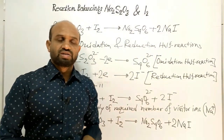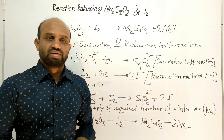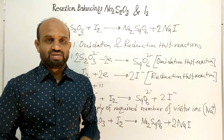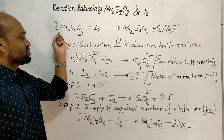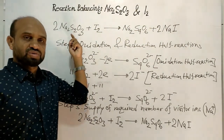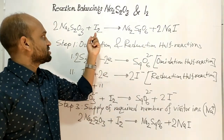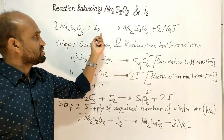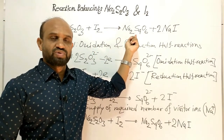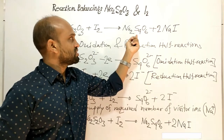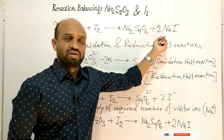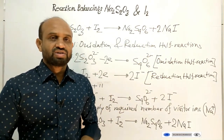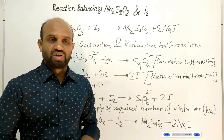The redox reaction is now fully balanced by the ion electron method: 2 sodium thiosulphate plus 1 molecule of iodine gives 1 molecule of sodium tetrathionate plus 2 molecules of sodium iodide. The reaction is completely balanced.